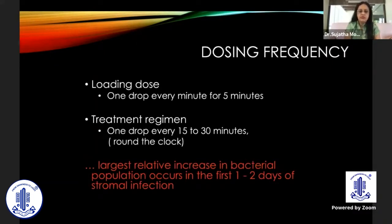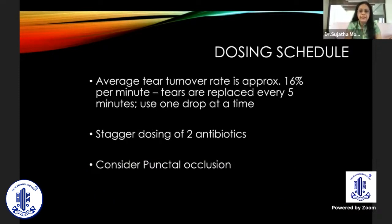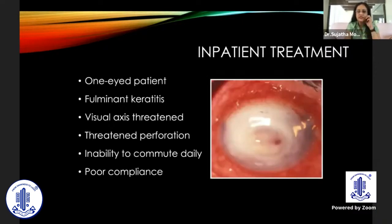When starting treatment, a loading dose is important to achieve minimum inhibitory concentration: one drop every one minute for five minutes, followed by every five minutes for 15 minutes, then every 15 to 30 minutes round the clock. The largest increase in bacterial population occurs in the first one to two days of stromal infection, so maximize antibiotic instillation. When using two antibiotics, use staggered dosing with a gap of five to ten minutes between drops, since tears are replaced every five minutes.